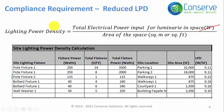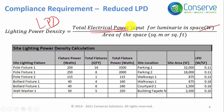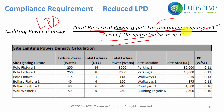Lighting Power Density (LPD) is the ratio of the total electrical power input for the luminaires installed in a space divided by the area of that space. Total electrical power is measured in watts, and area can be measured in square meters or square feet. A luminaire is simply a lighting fixture.